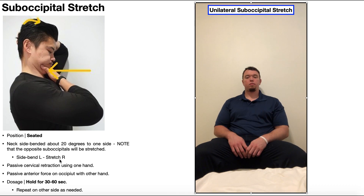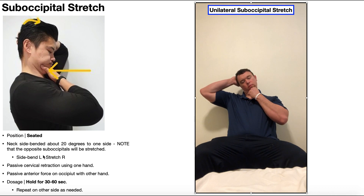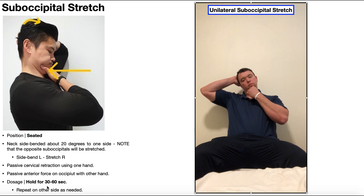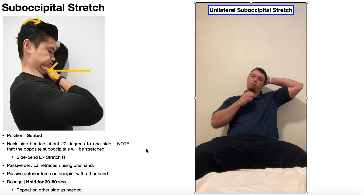Other than that, it's exactly the same. You're going to side bend a little bit, about 20 degrees, and then do that passive cervical retraction with one hand, while the other hand is behind the head giving that passive anterior force on the occiput. Dosage is the same — hold each of these stretches for about 30 to 60 seconds. And you'll want to repeat this on the other side, because here I'm stretching my left suboccipitals since I'm side bended to my right, so I'll want to repeat with side bending to the left to stretch the right suboccipitals.